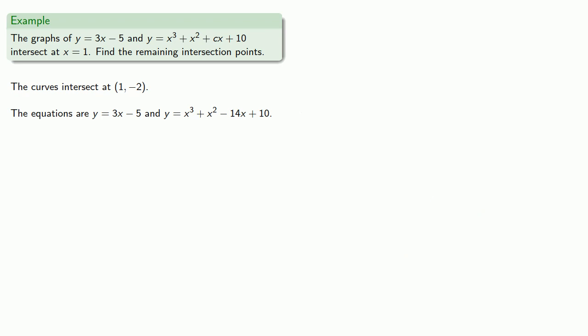Now we'd like to find any other intersection points. So we know that y equals 3x minus 5 and y equals x cubed plus x squared minus 14x plus 10.